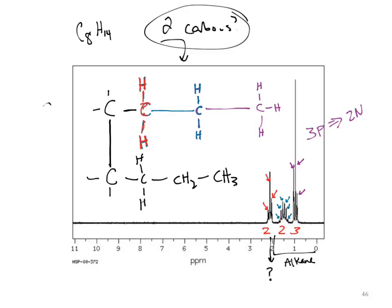If we calculated our degrees of unsaturation — two. Two pi bonds. What happens if I get rid of two of those bonds by making them a pi bond? One pi bond. Now what do I have? A triple bond. That satisfies our carbon NMR, our hydrogen NMR, and our mass spec.